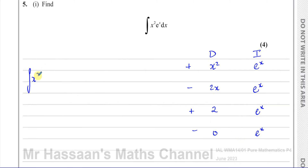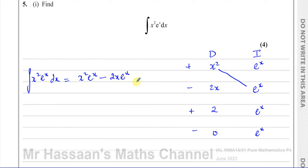Then it's very simple — you multiply diagonals. You get x squared times e to the power of x, then minus, so 2x times e to the power of x, then plus 2 times e to the power of x, and we're done apart from the plus c. Very simple, neat, easy, no hassle. I find this to be a really simple way of doing it — this is the DI method.